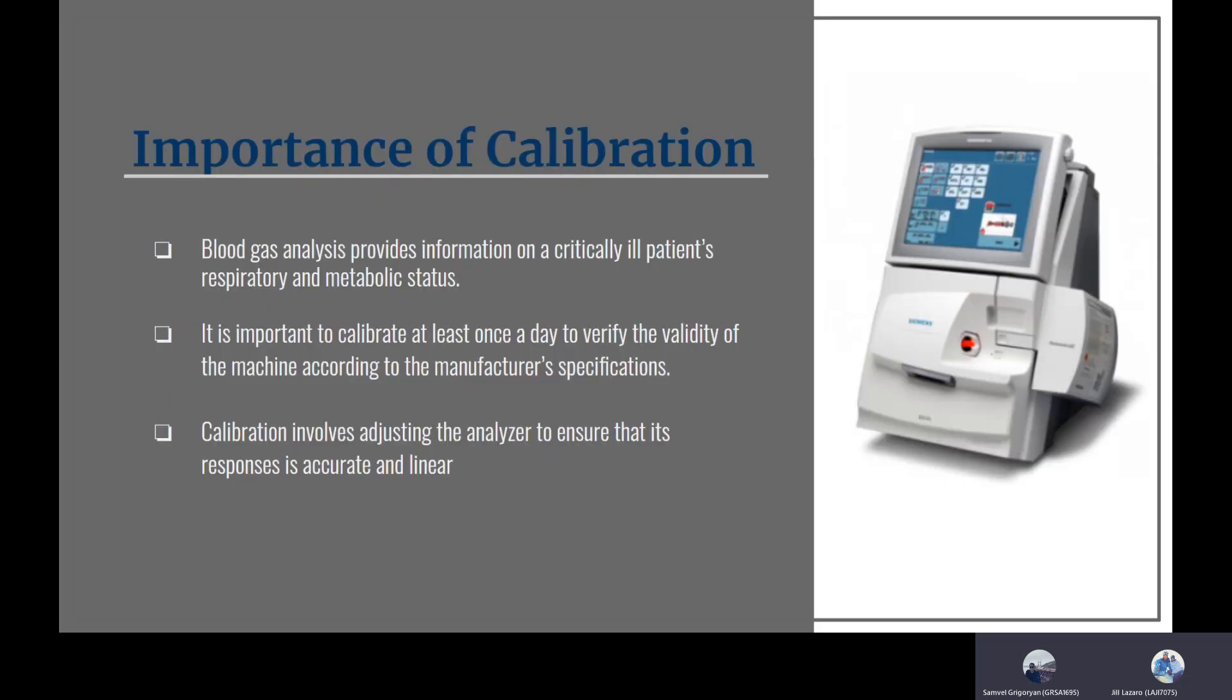Next we're going to talk about the importance of calibration. ABGs are an essential part of our respiratory work in identifying our patients' metabolic and respiratory status. In order to have accurate representation of those values, we need to make sure that our machines are properly calibrated. It's important to calibrate at least once a day to verify the validity of the machine according to the manufacturer's specifications.